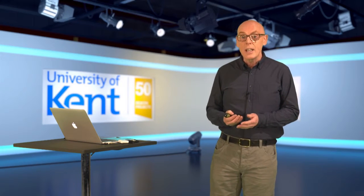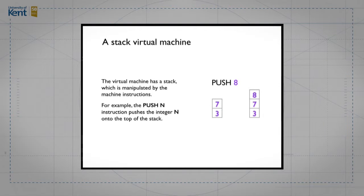The virtual machine we're looking at is a stack virtual machine — it uses a stack to hold intermediate values. The first instruction we have is to push a value onto the stack. If you start off with a stack with three and seven on top and you push eight, then eight appears on the top of the stack. That's one instruction.